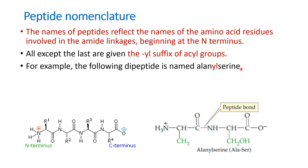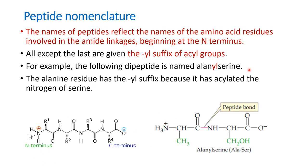When we represent a dipeptide by notation, we use three-letter abbreviations connecting the names of the amino acids. But when we write the full nomenclature, we write it as alanyl serine — that is the correct way to write the nomenclature.